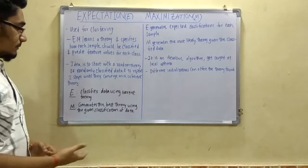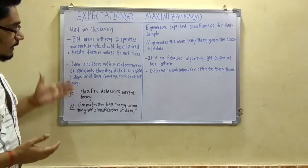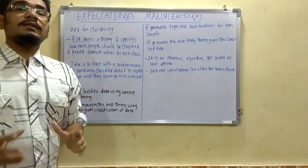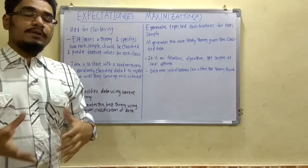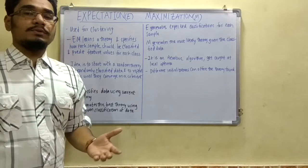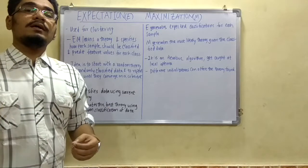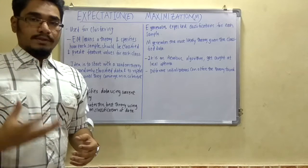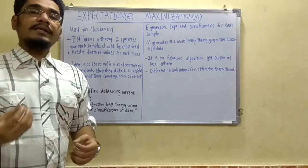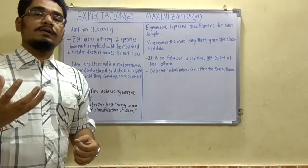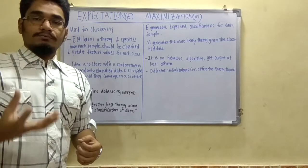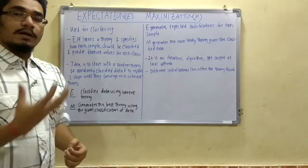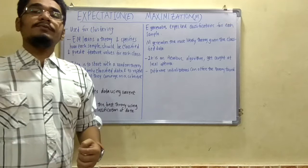Those two steps are E and M - expectation and maximization. Expectation classifies the data using the current theory. There are two types of theory: current theory and proposed theory. Current theory is what we get from stating the values or expectations, like when we read a particular training set, what kind of output should be generated.